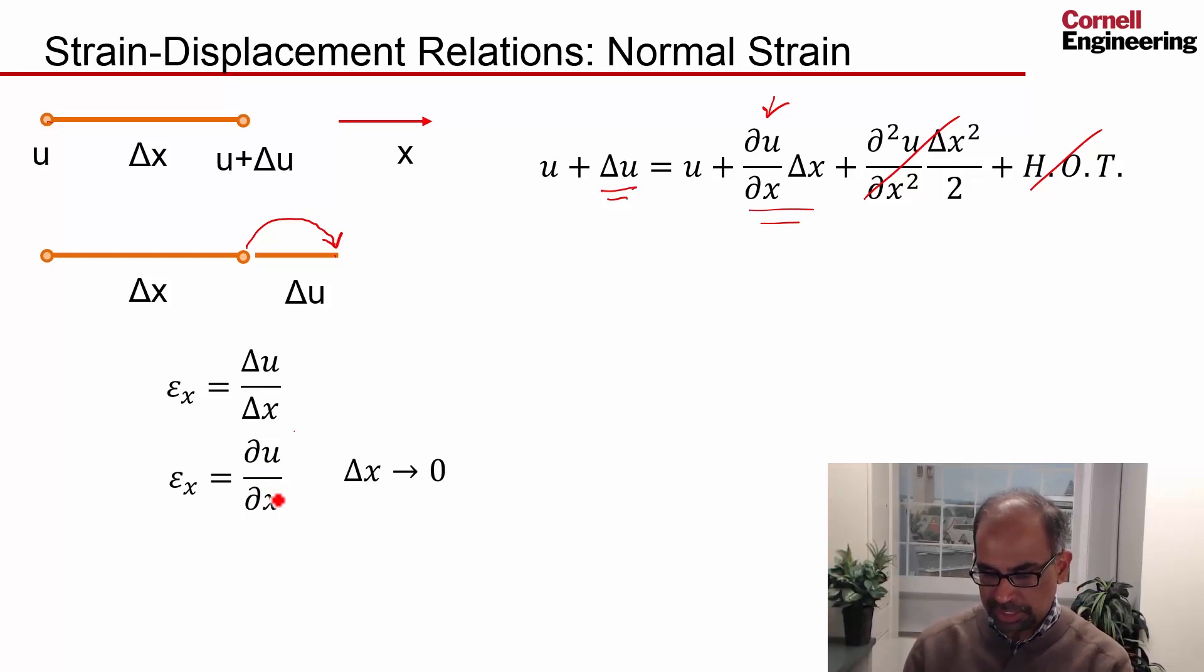By similar reasoning, I can write an expression for the normal strain in the y direction as the gradient of the v displacement. So εᵧ = ∂v/∂y, the displacement in the y direction.